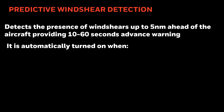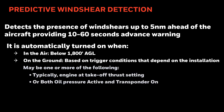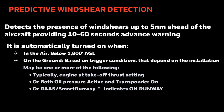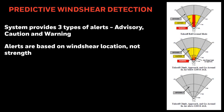Predictive wind shear detection detects wind shears up to 5 nautical miles ahead, giving 10 to 60 seconds advance warning. It is automatically turned on when in the air below 1,800 feet AGL. On the ground, trigger conditions depend on the installation and may include engine at takeoff thrust setting, both oil pressure active and transponder on, or RAS smart runway indicates on runway. At 1,800 feet, the system starts scanning for wind shear to provide advisory alerts at 1,500 feet and cautions and warnings at 1,200 feet AGL. The system can provide three types of alerts — advisory, caution, and warning — based on wind shear location, not strength.